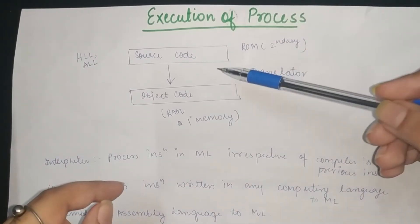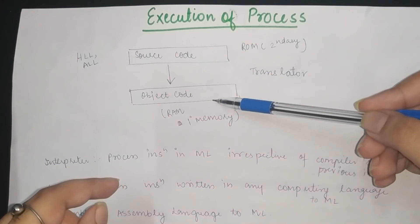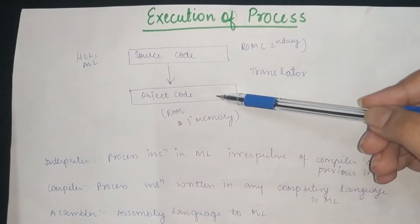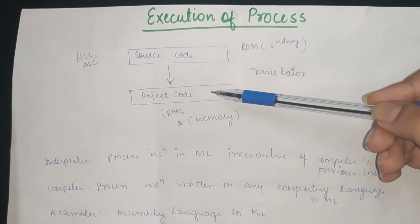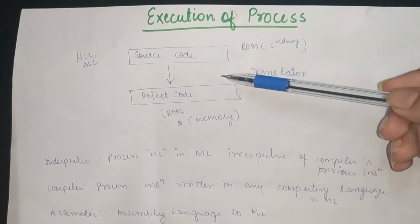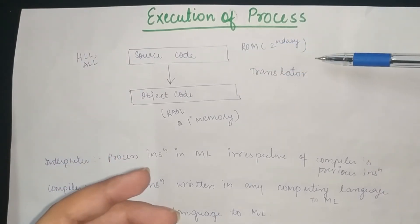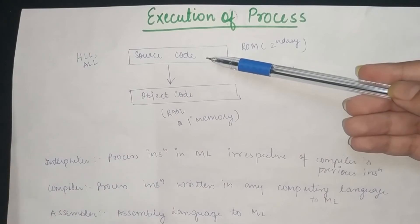Now we need to translate the source code into object code, or machine language, so that the computer can understand what we want to do. So this is why the translator is used in high level language.